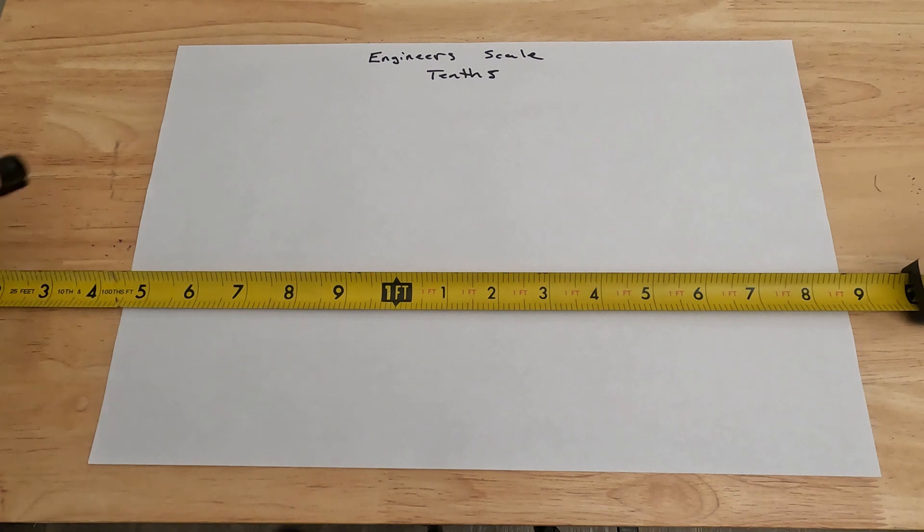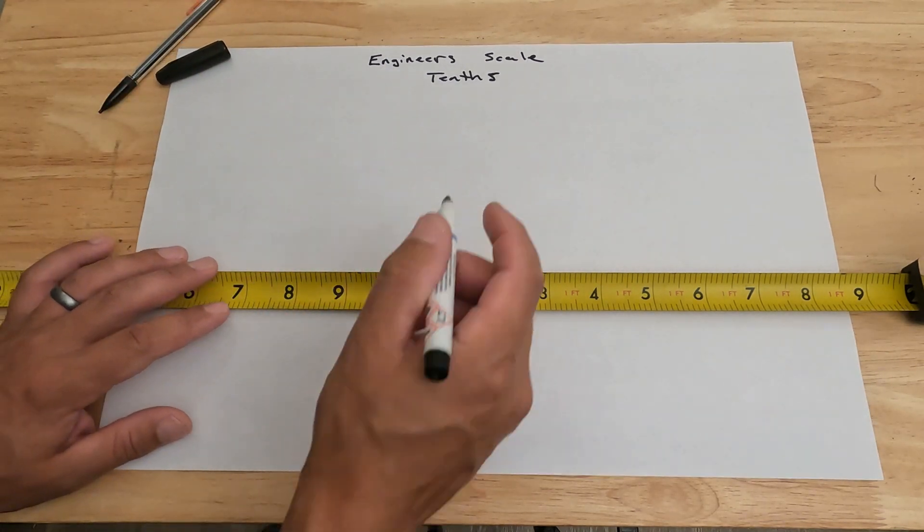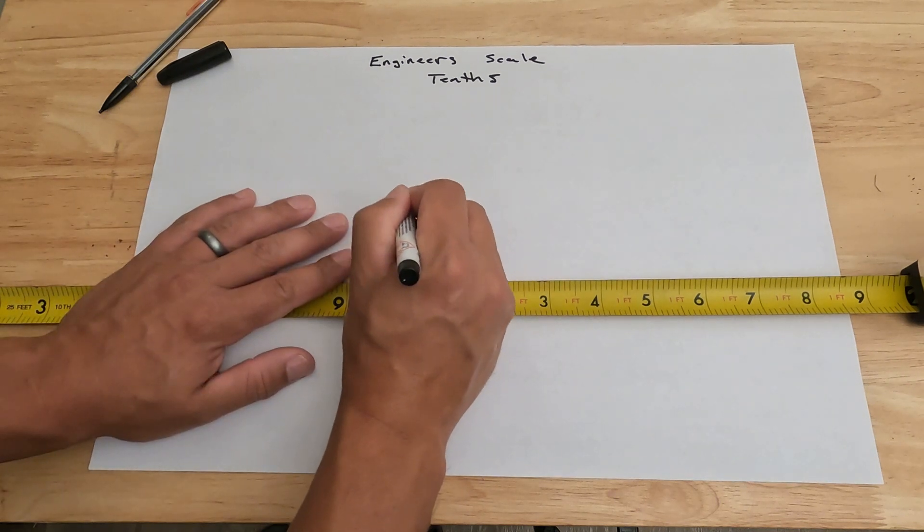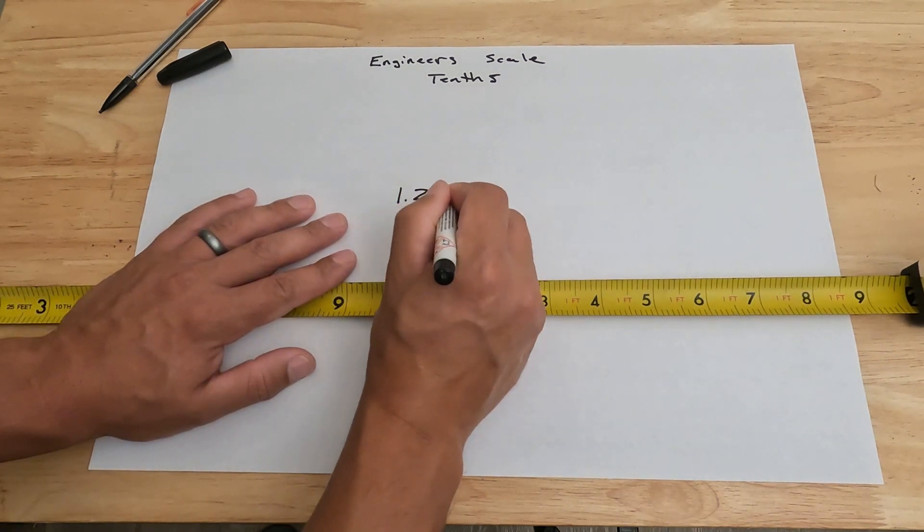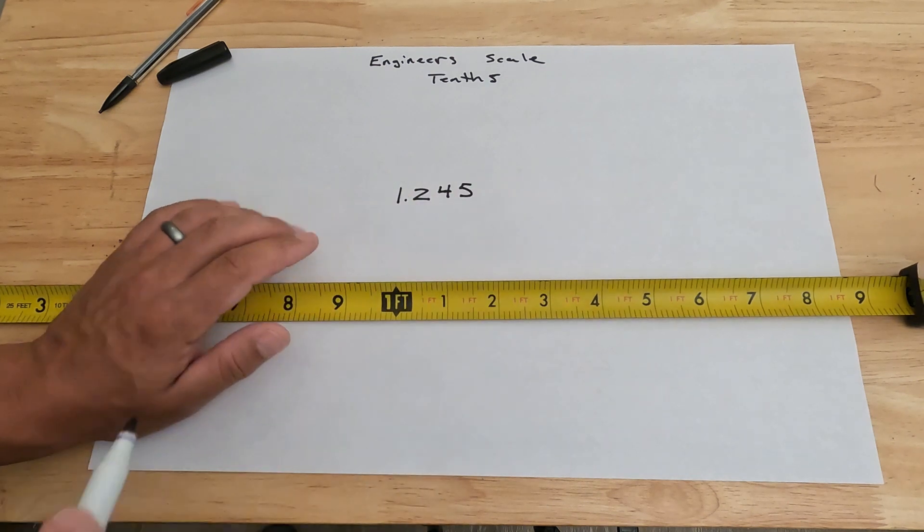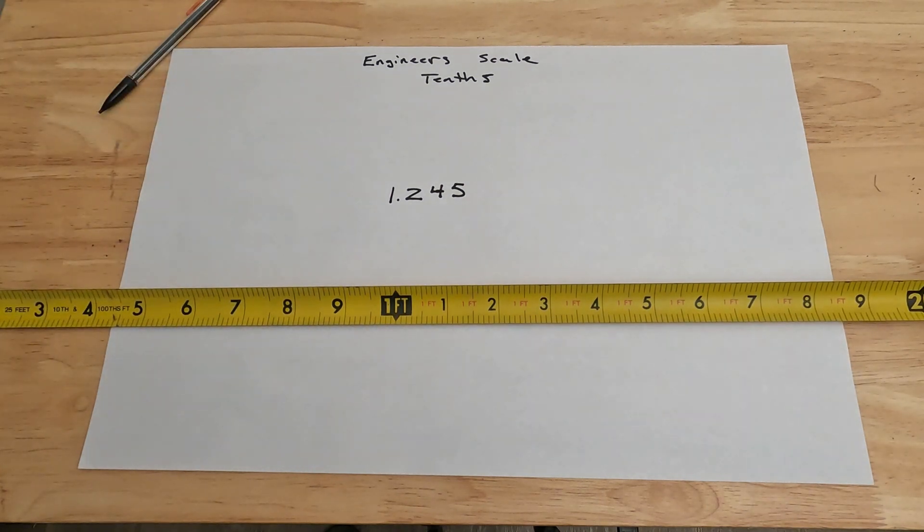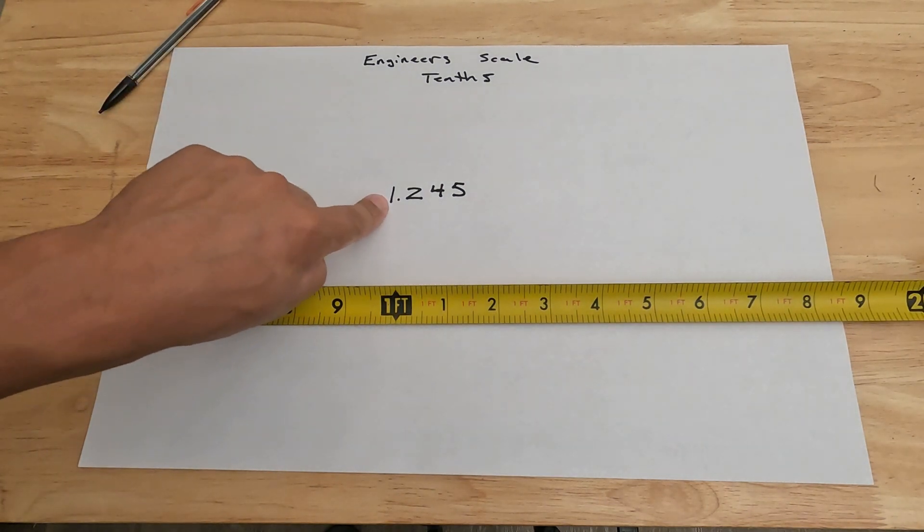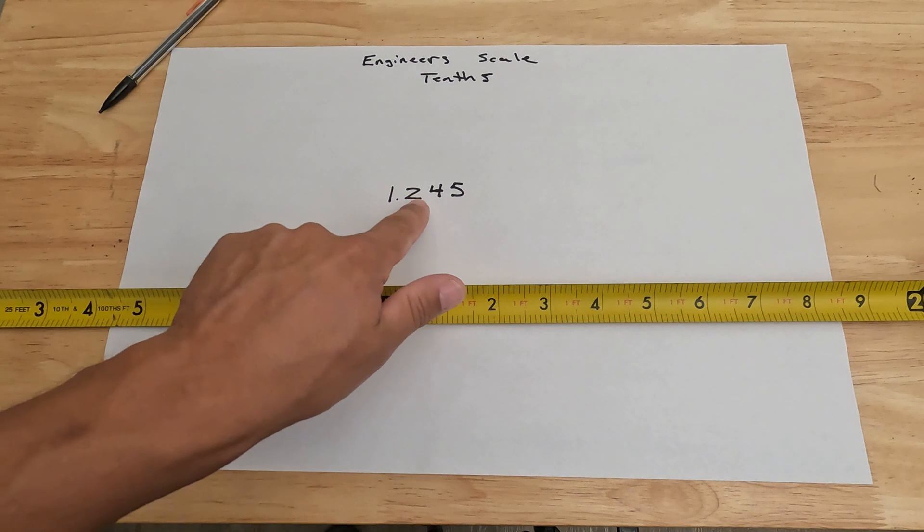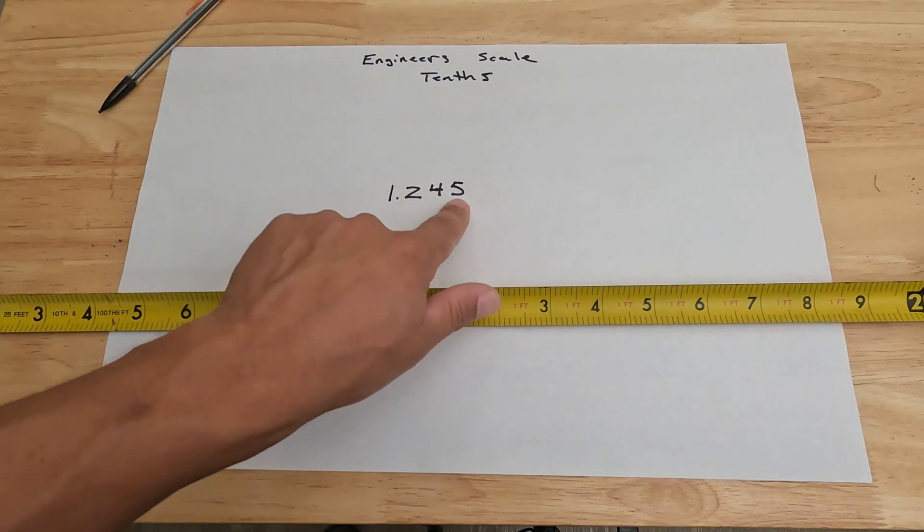So half of that would be five thousandths. We'll just give you an example of this real quick. Let's say our measurement is 1.245. So to read that, this would be our feet, so we have one foot. This would be our tenths. This would be our hundredths, and this would be our thousandths.